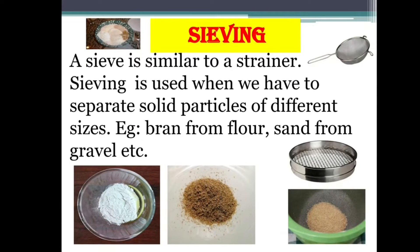Sieving — a sieve is similar to a strainer. Sieving is used to separate solid particles of different sizes. For example, you would have seen your mother sieving the flour. The example for sieving is bran from flour, and sand from gravel.